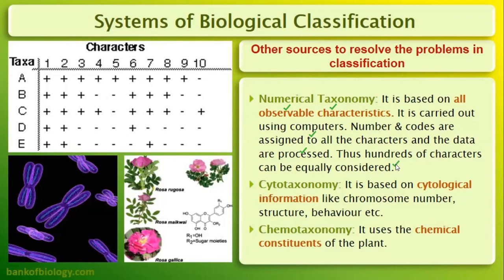Cytotaxonomy is based on cytological information like chromosome numbers, structure, and behaviour. Chromosome number is organism-specific, so cytotaxonomy deals with genetic information from chromosomes. Chemotaxonomy is based on the chemical constituents of plants — what main chemical compounds are involved in a plant. These three methods — numerical, cytotaxonomy, and chemotaxonomy — further help us in biological classification.